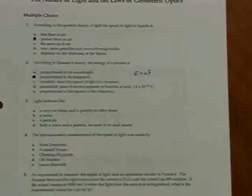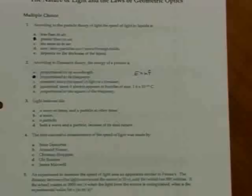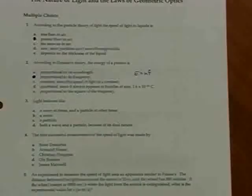Problem number four. The first successful measurement of the speed of light was made by Ole Rømer. In astronomical measurements of the moons going around Jupiter, he was able to come up with a pretty good estimate for the speed of light — actually two times 10 to the 8 meters per second.